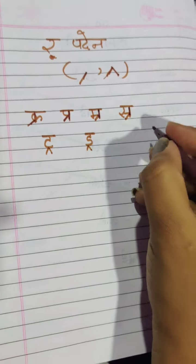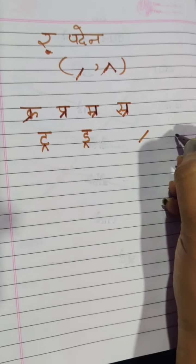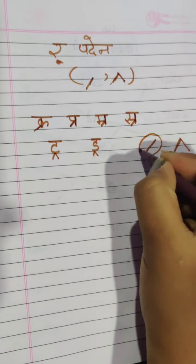There are two kinds of Padeen ki matra, like this and like this. For standing line we put like this and for a letter which is not having standing line we put like this.